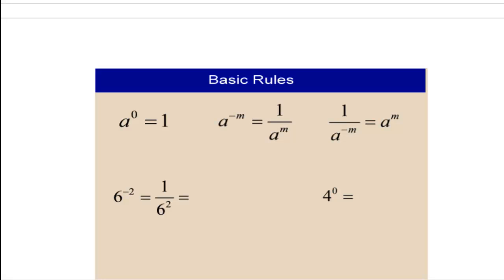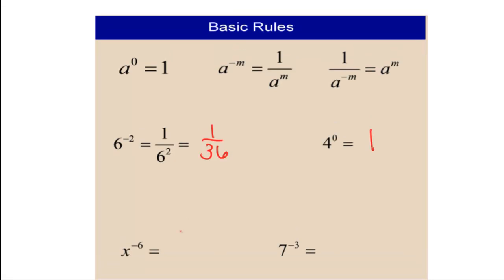I'm going to run through a couple of examples with our basic rules. Anything to the zero power is 1. a to the negative m is 1 over a to the m, and 1 over a to the negative m is a to the m. See if you can figure out the answers as I go. So 6 to the negative second means 1 over 6 to the positive second, which is 1/36. 4 to the 0 — anything to the 0 is 1. x to the negative 6 means 1 over x to the positive 6. 7 to the negative 3 means 1 over 7 to the positive third, which equals 1 over 343.